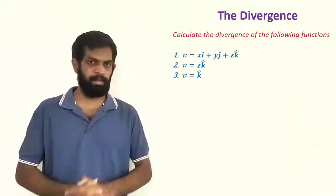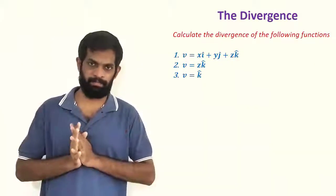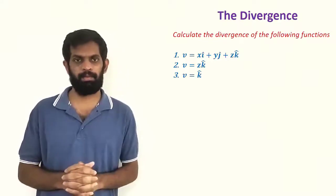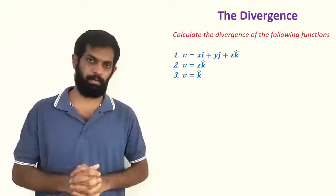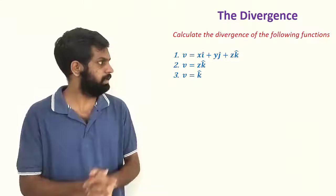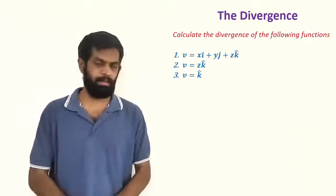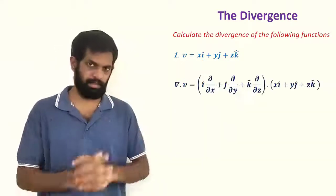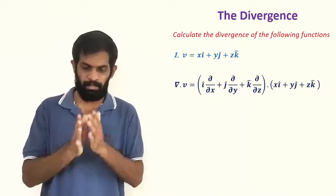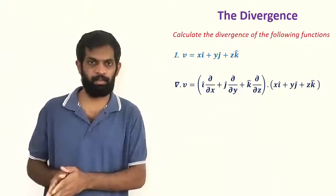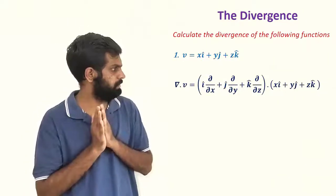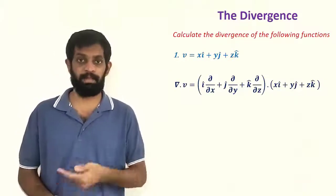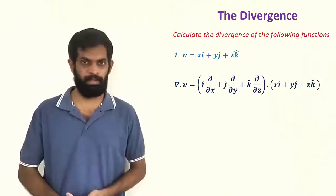So we are moving on to the first problem. It is given here: calculate the divergence of the following function. Vector function V equal to x i-cap plus y j-cap plus z k-cap. We need to find the divergence, that is del dot V.